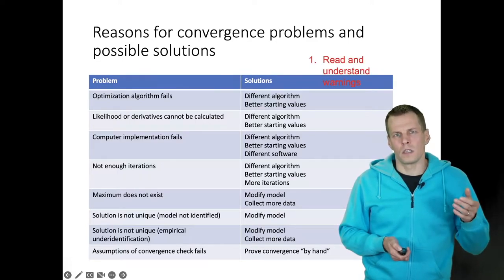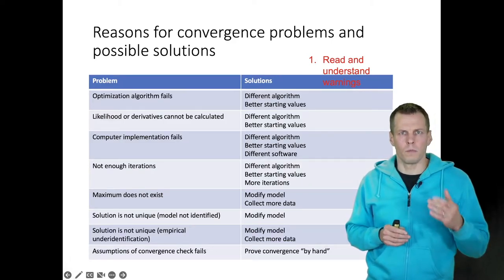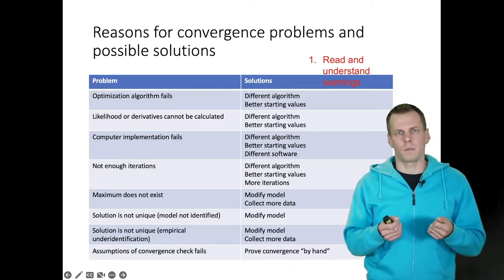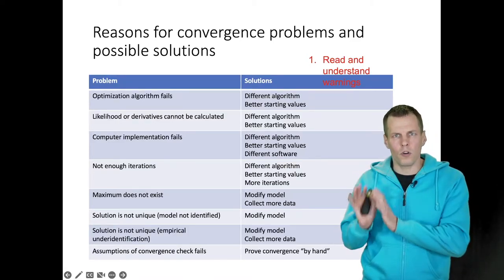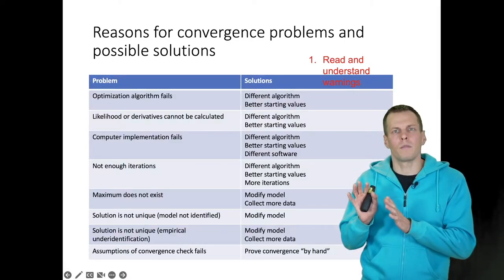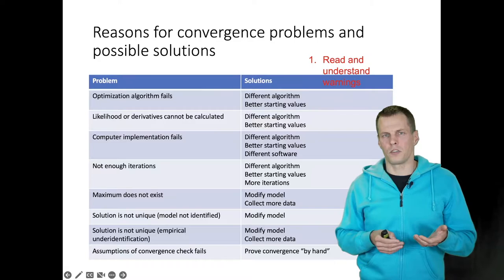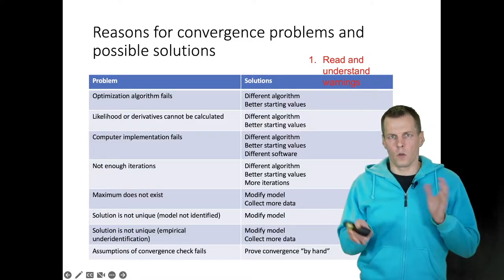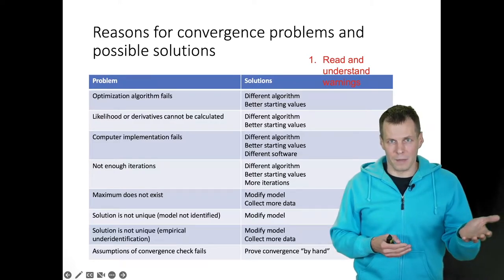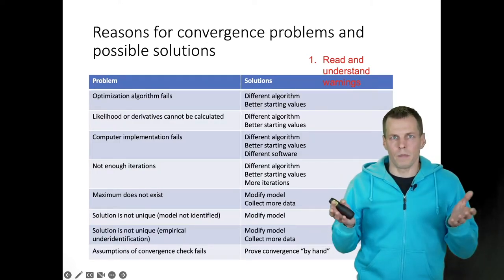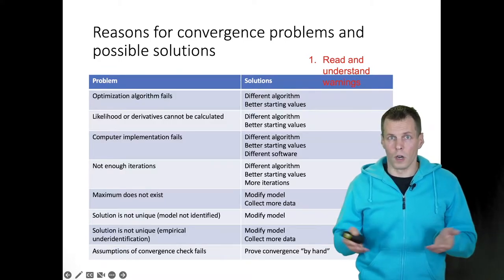The first thing I would do is read and understand the warning. If I haven't seen the warning before, I would look at my statistical software's user manual that explains the problem, or put it into Google and see what I find. Sometimes a warning can be difficult to understand even if someone explains it. So there's a trade-off: do you want to spend a week trying to understand what a warning means, or do you want to proceed with the diagnostics? This depends on your experience. If you have lots of experience, warnings are more useful. For example, if you have no idea what a Hessian matrix is, then a warning like 'Hessian is not positive definite' is not a very useful starting point.